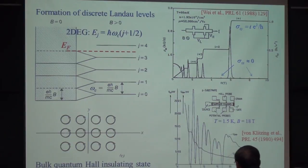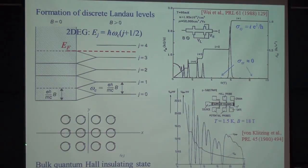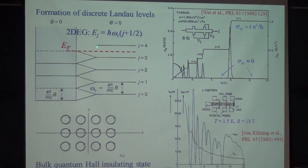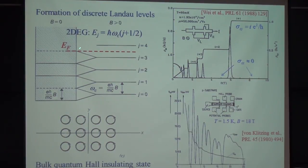One can begin to understand this by working out the 2D electron case in the presence of a strong magnetic field. It is well known that a 2D electron gas in a strong magnetic field will form discrete Landau levels. With this, people can understand that if the Fermi level is within this gap, then this phase would be insulating — and that's what we find.